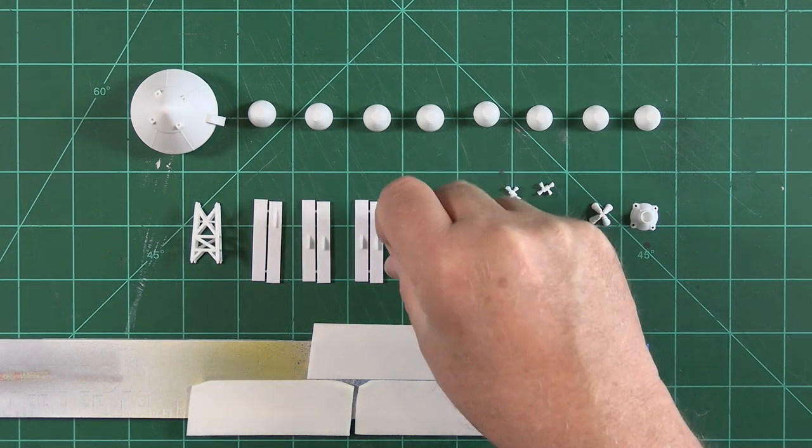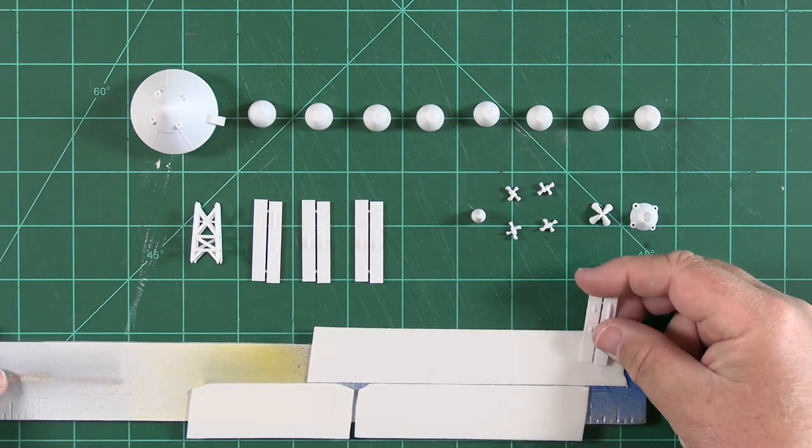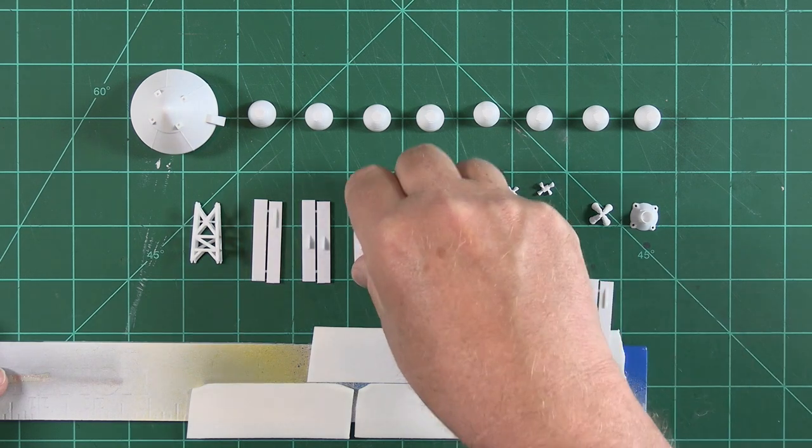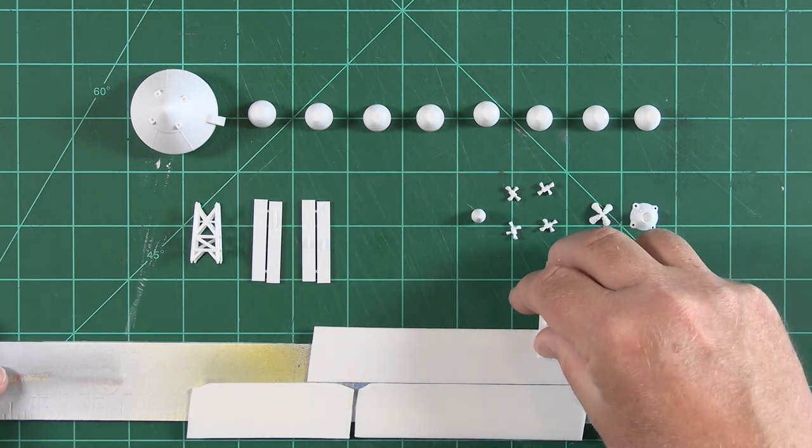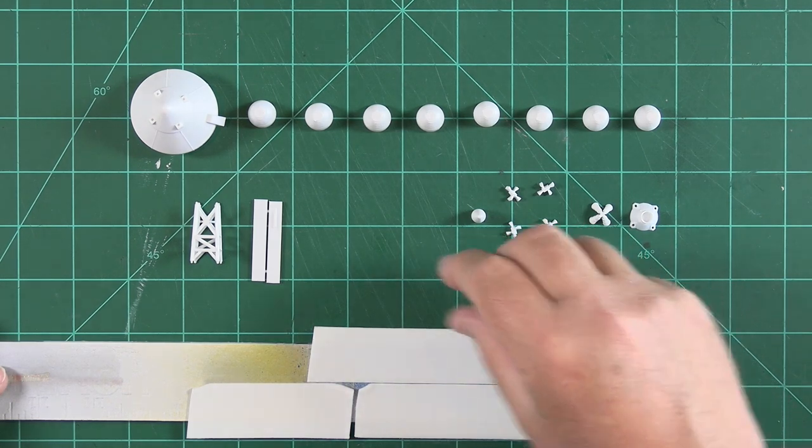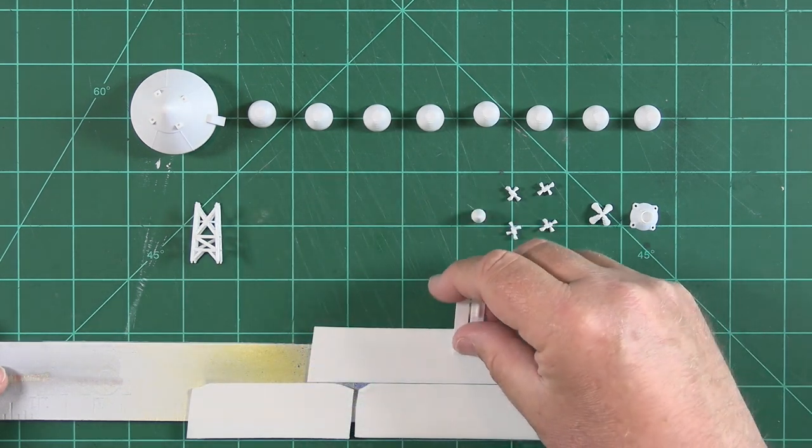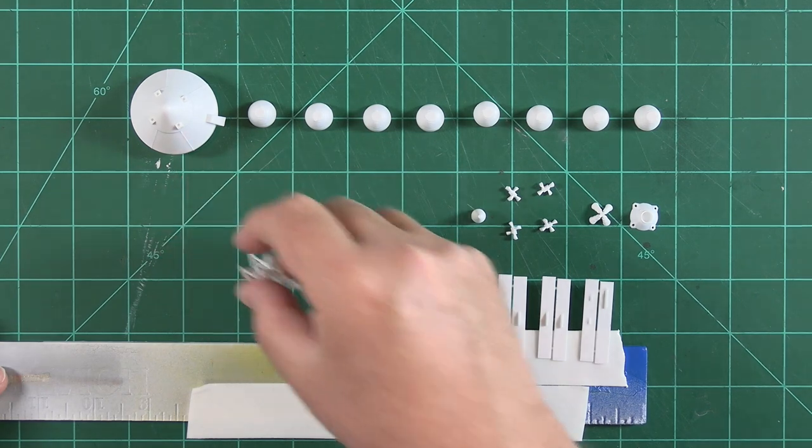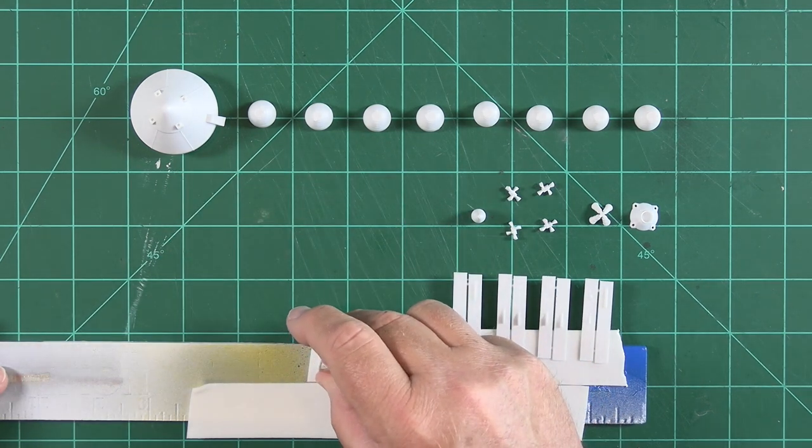The Saturn 1B mounted many of the telemetry and range safety antennas on four panels that were attached to the forward end of the first stage. We're going to use double sided tape to attach these to this old yard stick for painting. We'll also attach the rocket nozzles for the display set and all the other parts that we've prepped to get them ready for priming.